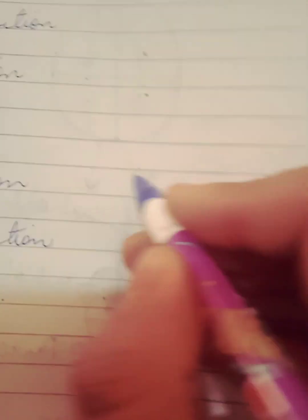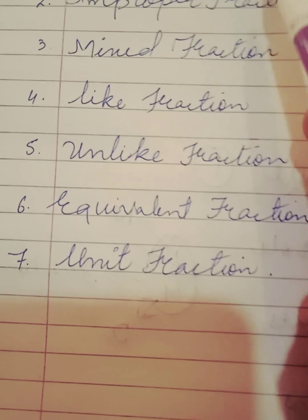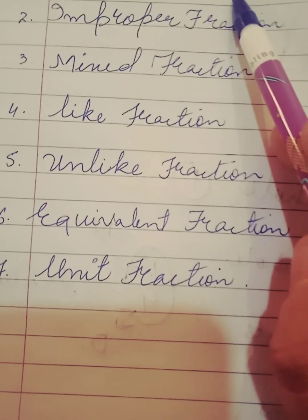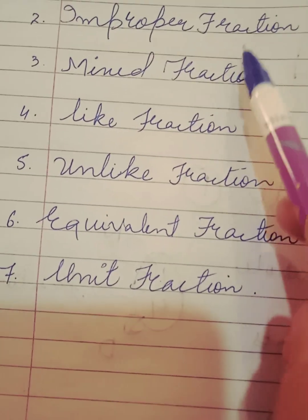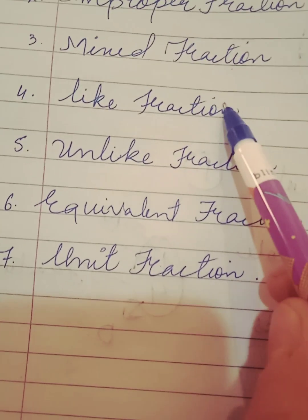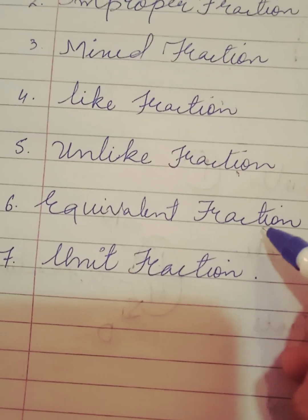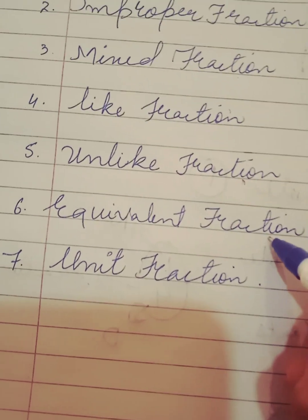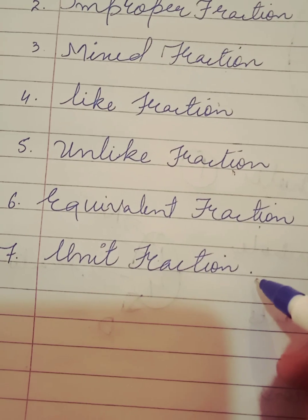Now, types of fractions. We have 7 types of fractions: 1) Proper fraction, 2) Improper fraction, 3) Mixed fraction, 4) Like fraction, 5) Unlike fraction, 6) Equivalent fraction, 7) Unit fraction.